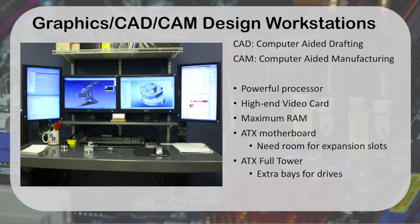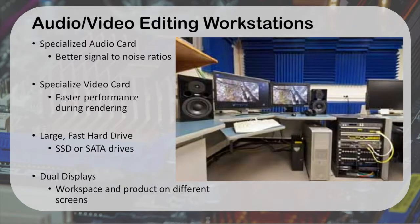A CAD/CAM workstation requires a high-end graphics card and a lot of memory — not your typical 4 or 8 gigabytes, but 16 or 32 gigabytes. You want a full ATX motherboard so you have room for expansion slots and can put in dual video cards if needed. A full tower lets you support lots of extra hard drives, and you might run RAID 0 for additional speed during graphical processing. These workstations can be very expensive — a good CAD or CAM design workstation could cost $5,000 to $10,000.